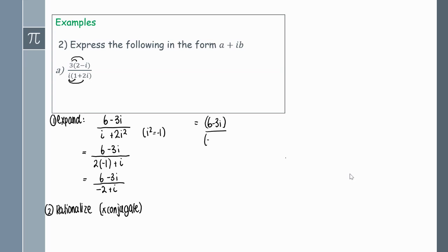If my base is minus 2 plus i, I'm going to multiply both by minus 2 minus i, just flipping that middle sign. Then we have to expand, so use FOIL on the top. We'll get minus 12 plus 6i minus 6i, and then positive 3i times negative i will become positive 3i squared.